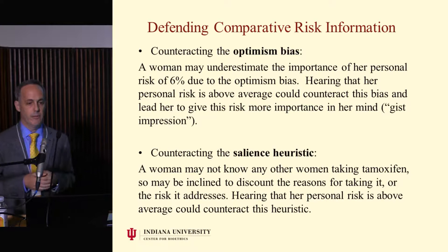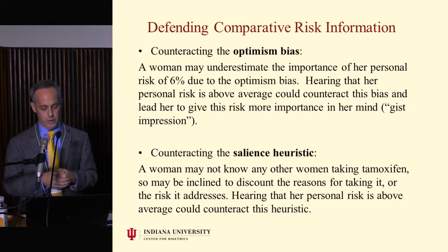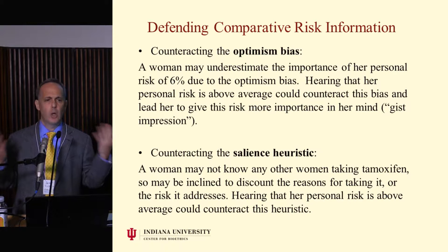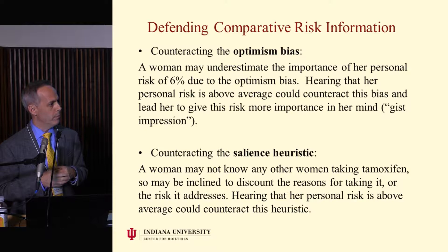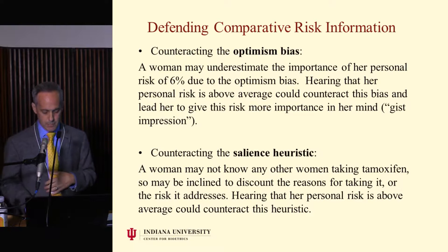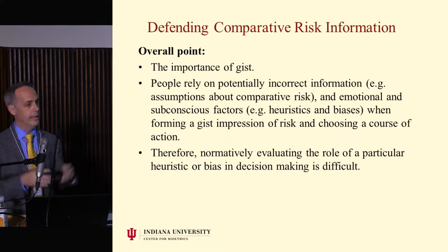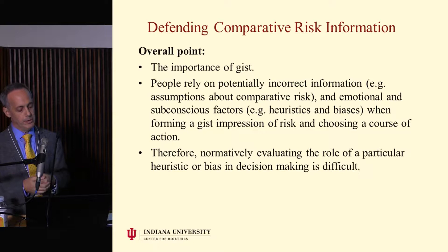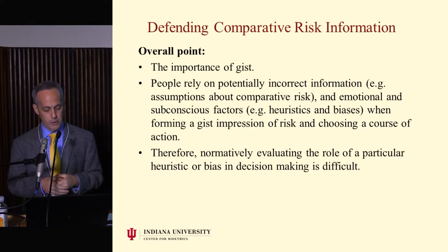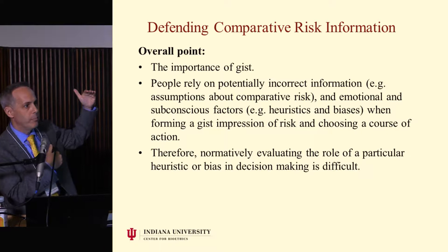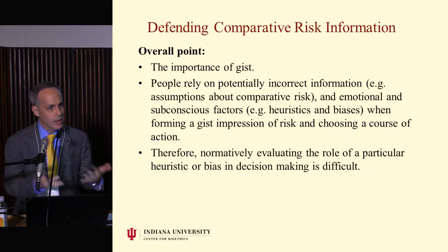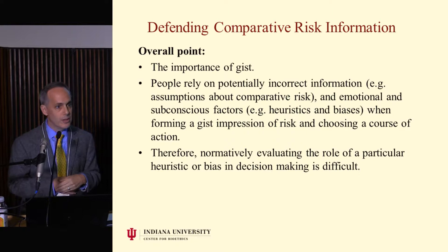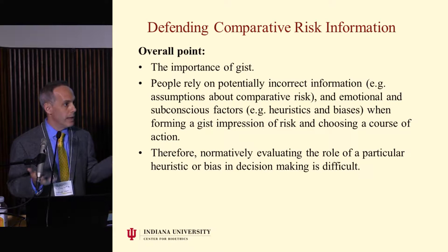Here's another example — the availability heuristic. A woman may not know any other women taking tamoxifen, and so may be inclined to discount the reasons for taking it. They say, 'I've never heard of that, it can't be important.' That's not right. Hearing that her personal risk is above average could counteract that heuristic. So here's my overall point: the importance of gist should not be forgotten. People can hear numbers, they form gist, and they rely on potentially incorrect information and subconscious factors like heuristics when forming their impression of risk. Normally evaluating the role of a particular heuristic in decision-making is difficult — you can't just assume it the way they did in that paper.